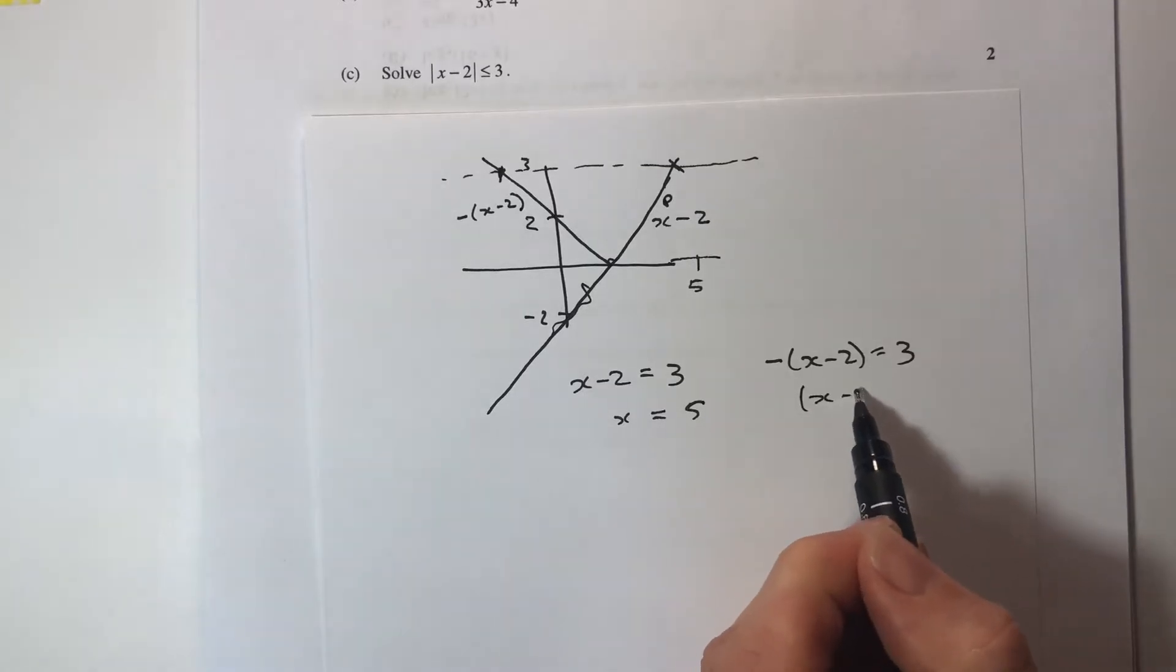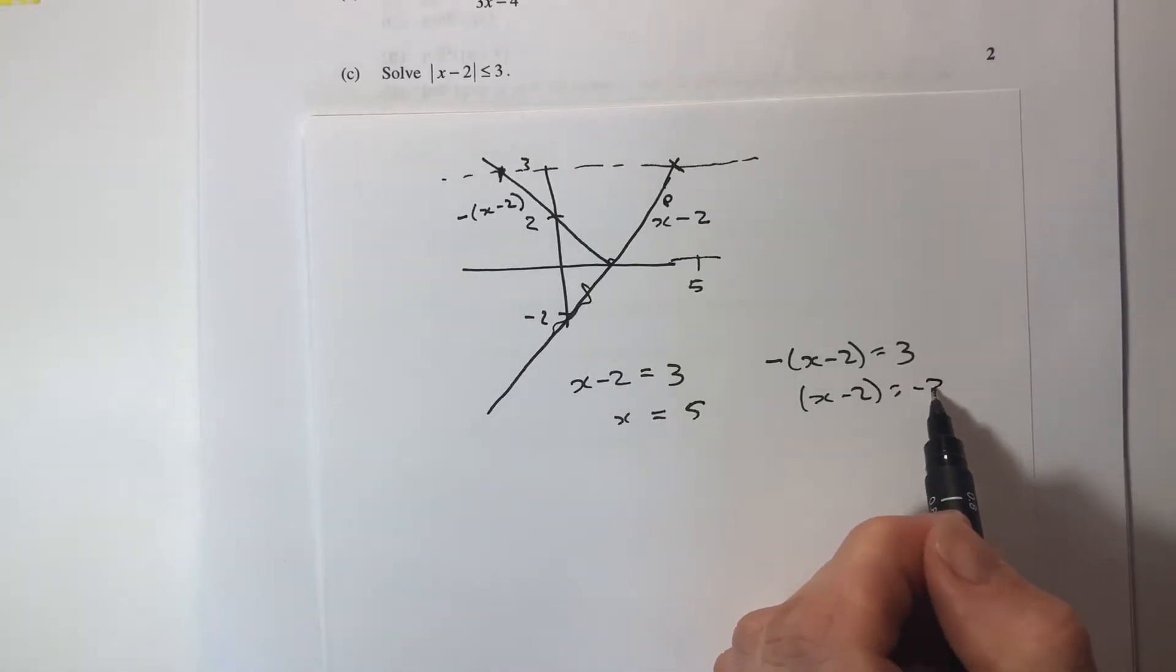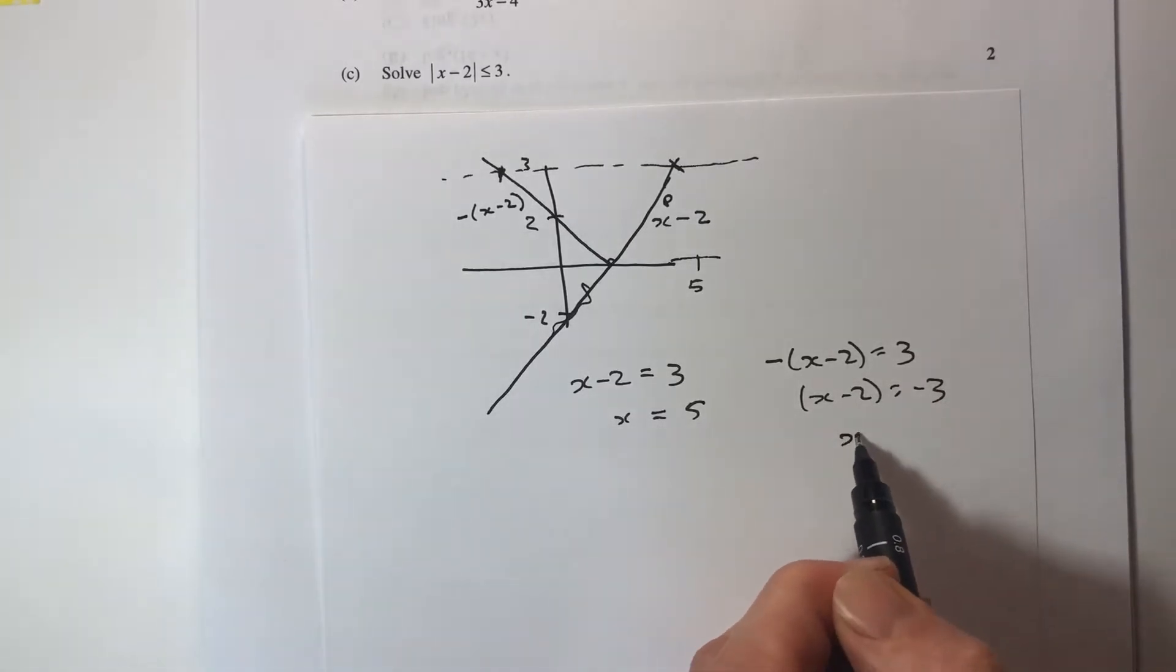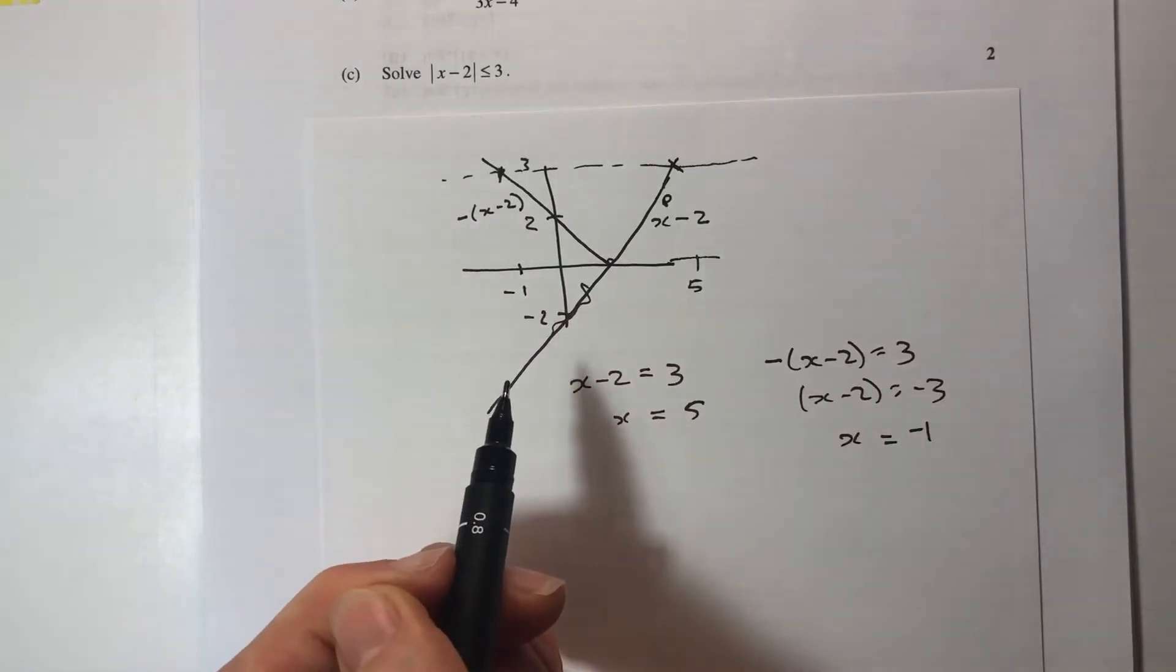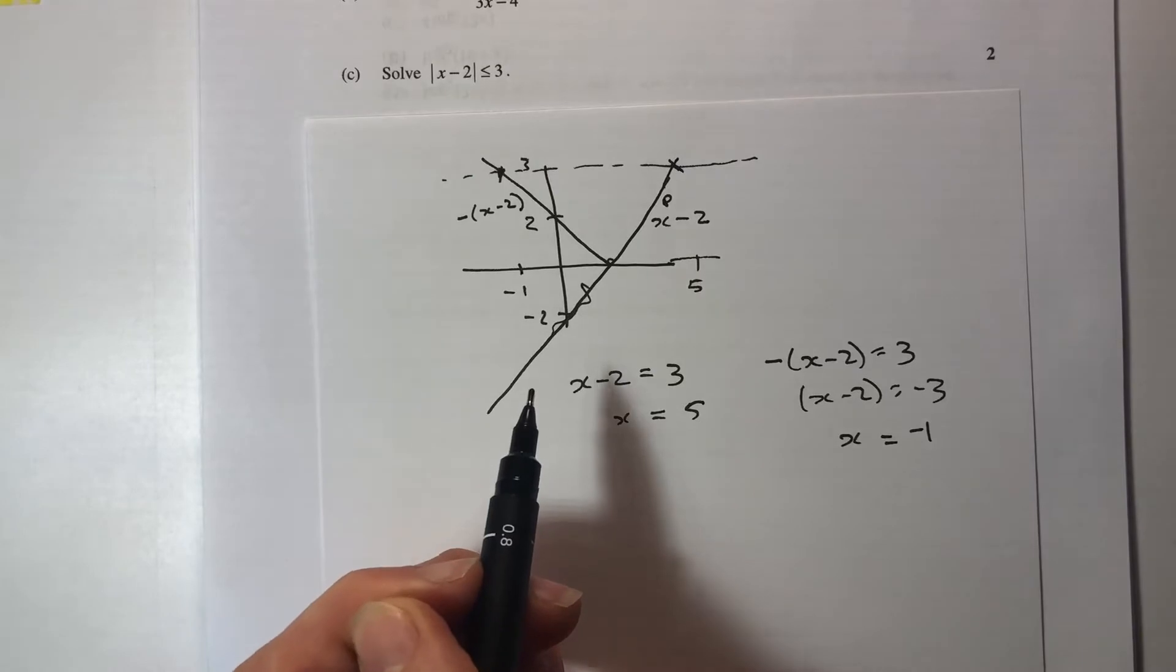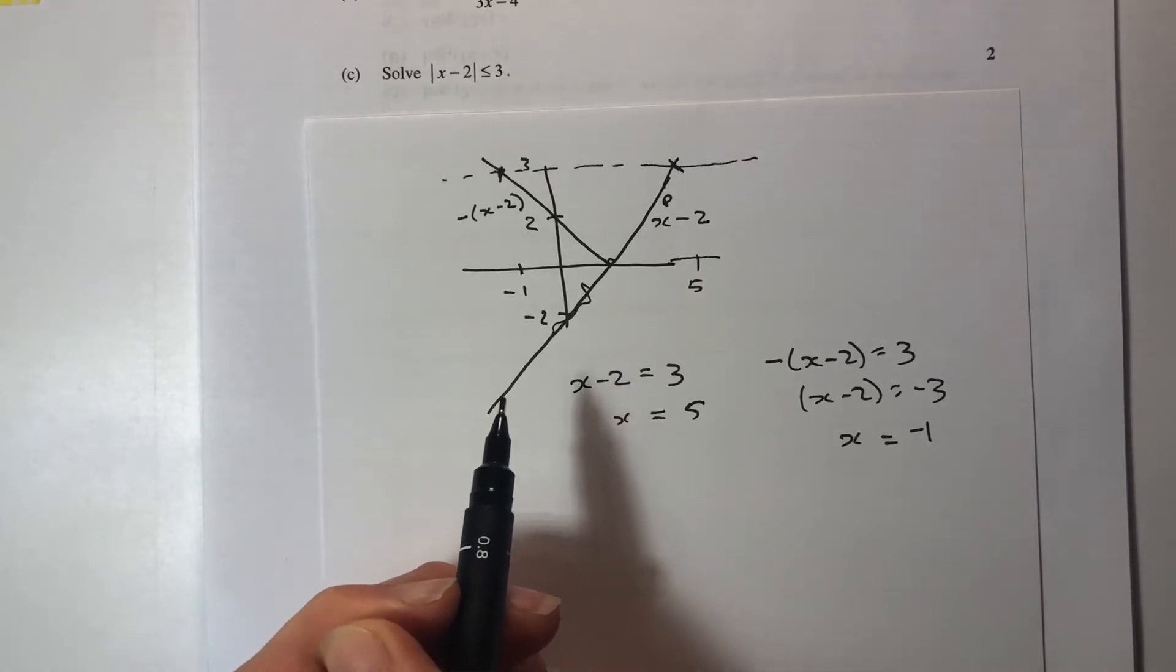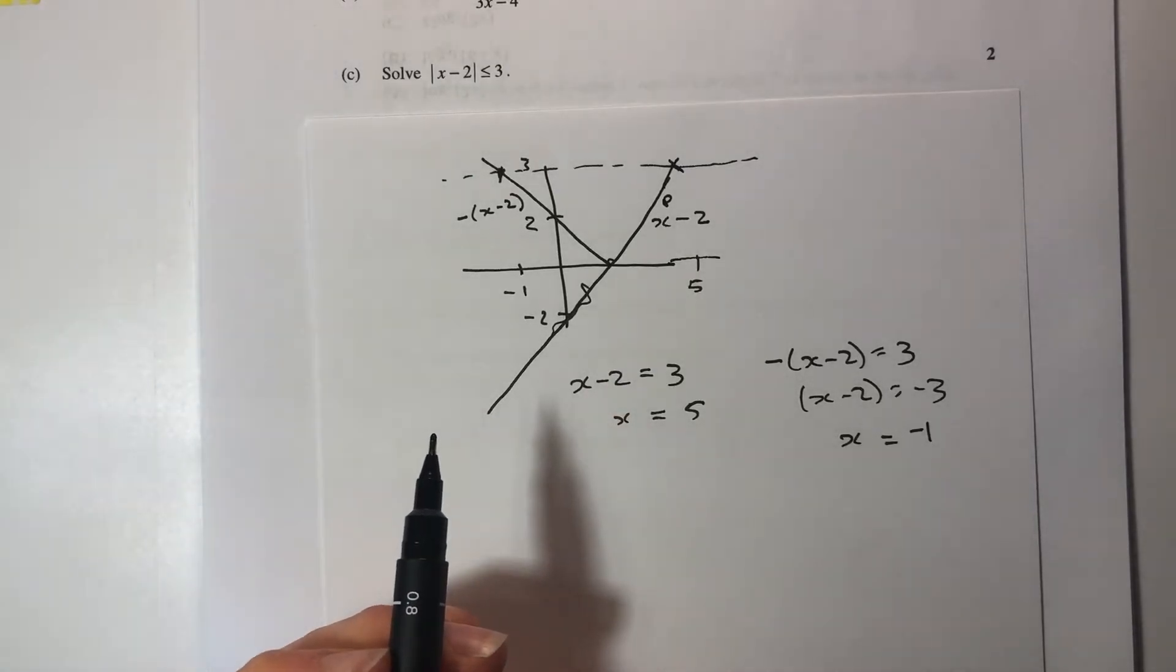Over here, x minus 2 would equal negative 3, add 2 to that side, so x equals negative 1. A reasonable looking response according to my diagram, which is why I like drawing the diagram because I know far more likely if I'm going to be right or not.